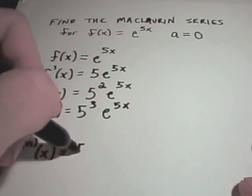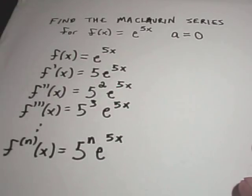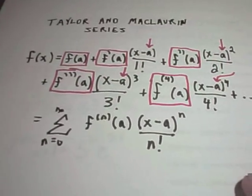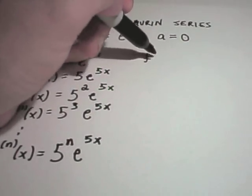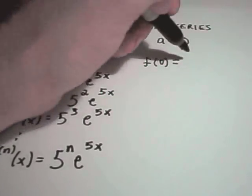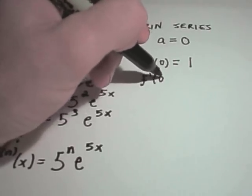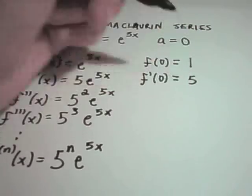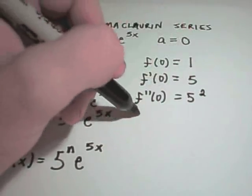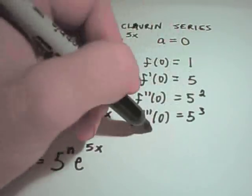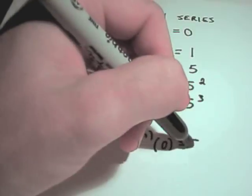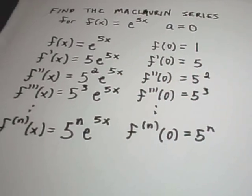In general, the nth derivative is 5 to the n times e^(5x). Now plugging in a equals 0: f(0) = e^0 = 1, f'(0) = 5 times e^0 = 5, f''(0) = 5 squared, f'''(0) = 5 cubed, and in general the nth derivative evaluated at 0 is 5 to the n.